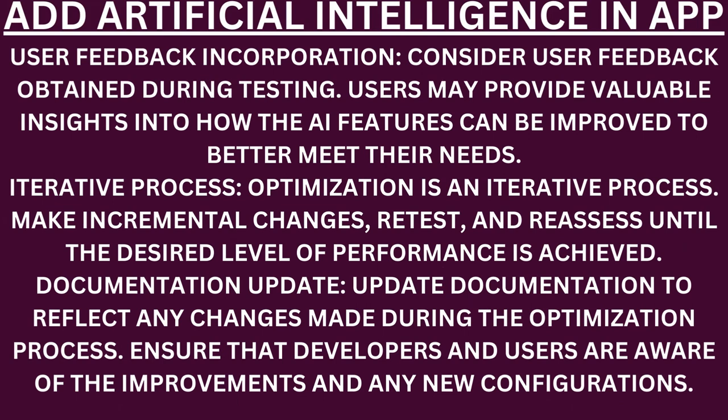User feedback incorporation. Consider user feedback obtained during testing — users may provide valuable insights into how AI features can be improved to better meet their needs. Iterative process. Optimization is an iterative process — make incremental changes, retest, and re-assess until the desired level of performance is achieved. Documentation update. Update documentation to reflect any changes made during the optimization process, ensuring developers and users are aware of improvements and any new configurations.